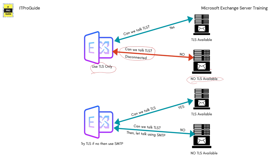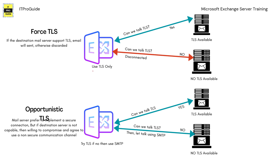If you configure Exchange to communicate only over a TLS encrypted line, you may end up with many emails bouncing back because not all email servers in the world have TLS capability. You can put it to try TLS first — when your Exchange Server tries to communicate with any server, it will first try TLS, choosing a secure way. If the destination mail server is not capable of TLS encrypted communication, this is known as force TLS — where you are configured to only communicate over a TLS encrypted channel.